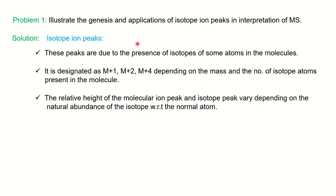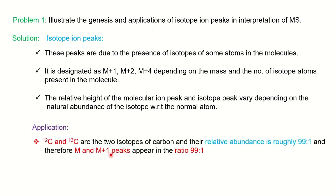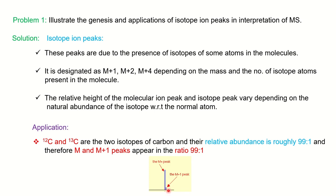The number of peaks depends on the number of isotopes, and the relative height of the isotope peak depends on the natural abundance relative to the molecular ion. Now for the first application: the isotope of carbon-12 is carbon-13. Since all molecules are made up of carbon, you can definitely find this peak in the mass spectrum. The relative abundance of the two is 99:1, so since the mass difference is +1, you will find M and M+1 peaks with a ratio of 99:1, meaning 99% intensity for carbon-12.